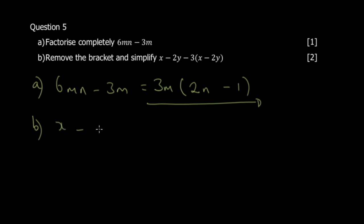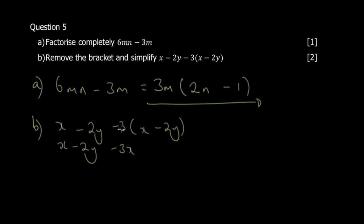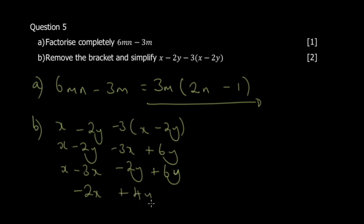Part 5b: remove the brackets and simplify x − 2y − 3(x − 2y). Expand the bracket: −3 × x = −3x, and −3 × −2y = +6y. So we get x − 2y − 3x + 6y. Collecting like terms: x − 3x = −2x, and −2y + 6y = 4y. The final simplified answer is −2x + 4y. We'll continue from question 6 through 10 in the next video.